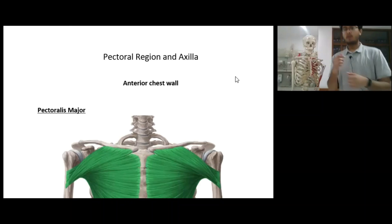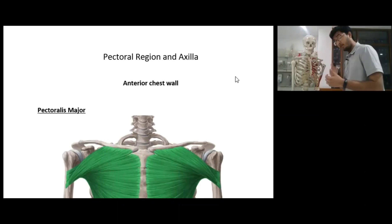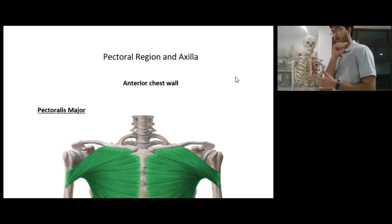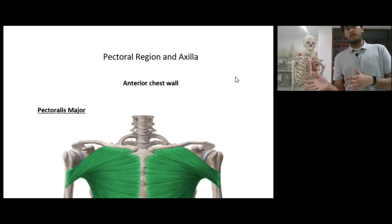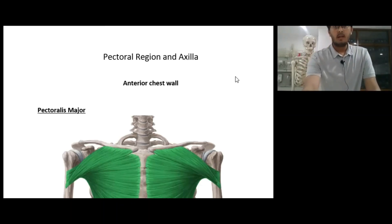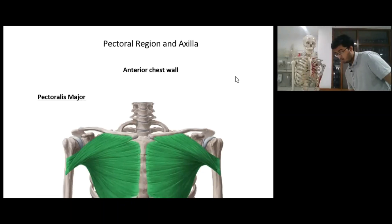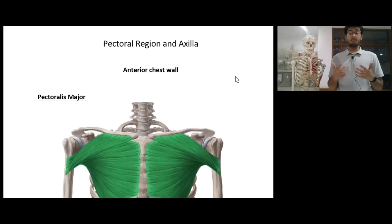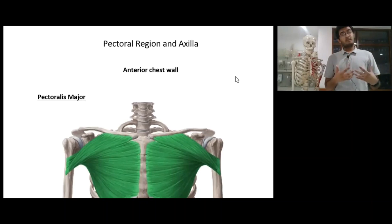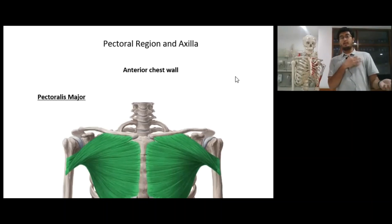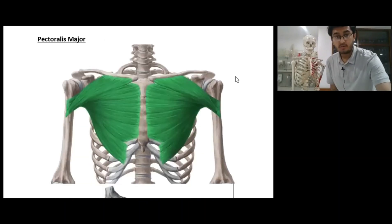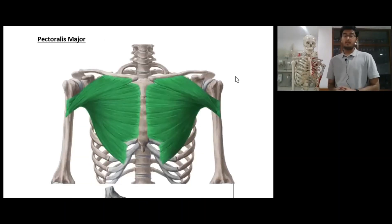We'll also be going over the muscles of the back later on. So let's start. Whenever we talk about the pectoral region, I'm sure those who go to the gym and work out a lot have heard the word pectoralis major before. That is the major muscle which actually forms the anterior chest wall. The muscle coming on your screen is the pectoralis major.